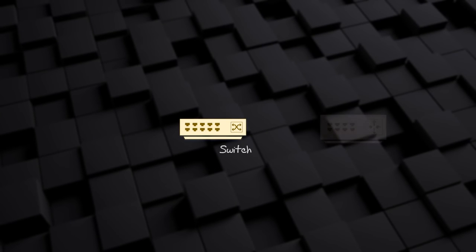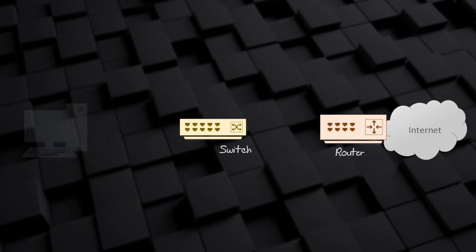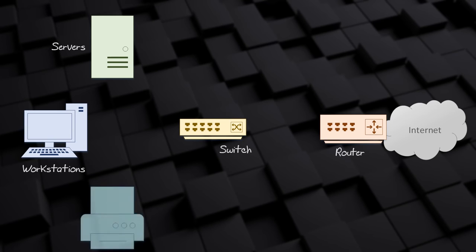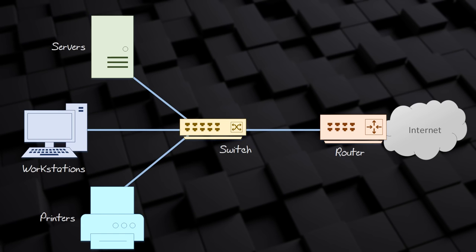Networks connect devices — you could call devices on the network nodes. Nodes may include devices that help control the traffic flowing through a network, like switches and routers. Nodes also include endpoints or hosts — these are devices that send and receive the bulk of the traffic, such as workstations, servers, and printers. Networks come in different sizes. A network at home is an example of a small network; these networks usually only have a few nodes. This is called a SOHO network — SOHO means Small Office Home Office.